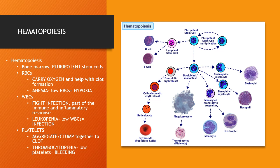White blood cells are called leukocytes, and leukocytes fight infection; they're part of the immune and inflammatory response. Someone who has low white blood cells has leukopenia, and they are at high risk for infection. Platelets are referred to as thrombocytes because they aggregate and clump together to form a thrombus or a clot. When somebody has low platelets, they have thrombocytopenia, and they are at risk for bleeding.